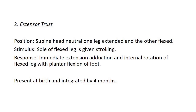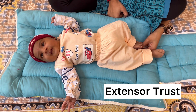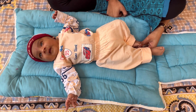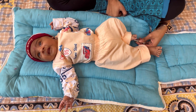The second one is extensor thrust. Position: supine, head neutral, one leg extended and the other flexed. Stimulus: sole of the flexed leg is given stroking. Response: immediate extension, adduction and internal rotation of the flexed leg, and plantar flexion of foot. Present at birth and integrated by four months. Here, as you can see, the left lower extremity is in flexion. When stimulated, an extensor response is seen.